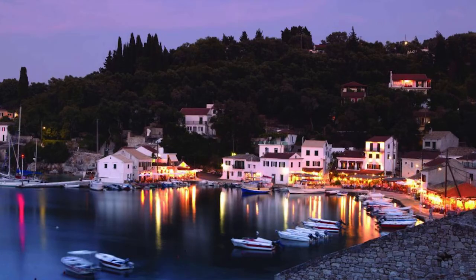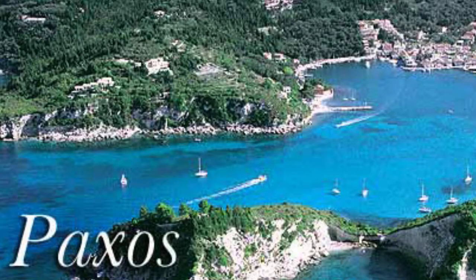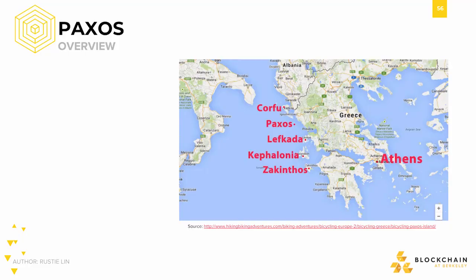All these images are from a beautiful island called Paxos, located off the west coast of Greece. It's famous for its wine and is home to some of the finest sands in all of the Ionian Sea. Apparently it's also a very popular yachting location. Right there on the map, on the west side of Greece, just south of Corfu, is Paxos.